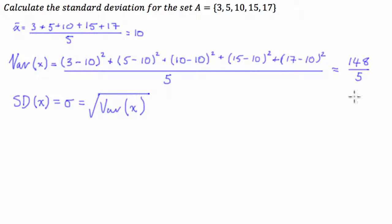So what we have, we've returned our variance number, which is 148 over 5. So we're going to say that the standard deviation then is equal to the square root of 148 divided by 5.